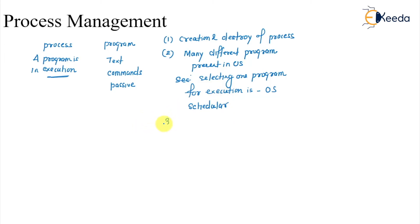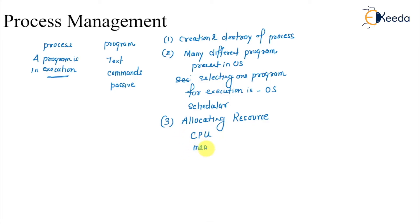The third responsibility is allocating the resources required by the program. That may include the CPU itself, memory, and if there is any file or any input/output activity.